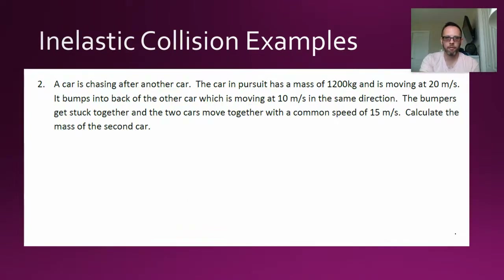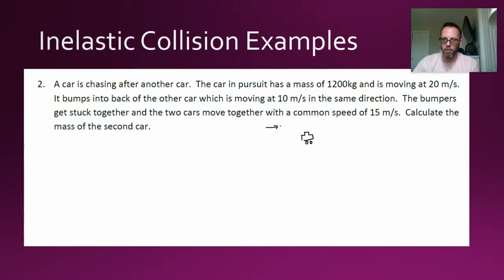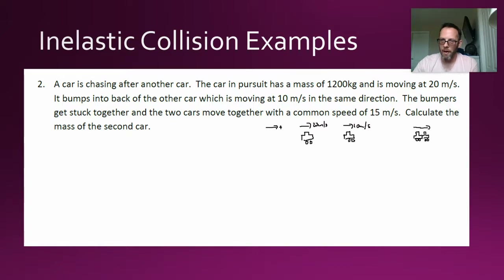Problem two: a car in pursuit has a certain mass and moves at 20 meters per second, bumping into the back of another car moving at 10 meters per second in the same direction. The bumpers get stuck together and the two cars move with a common speed of 15 meters per second. We're going to find the mass of the second car. Both cars initially travel separately to the right, then stick together at 15 m/s.